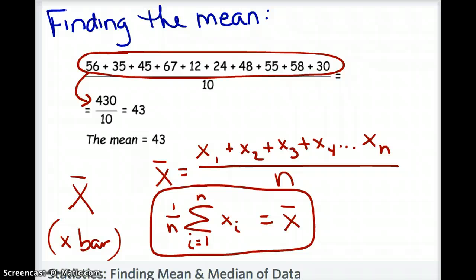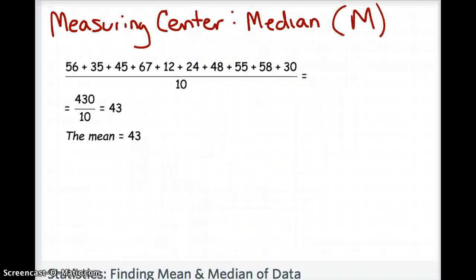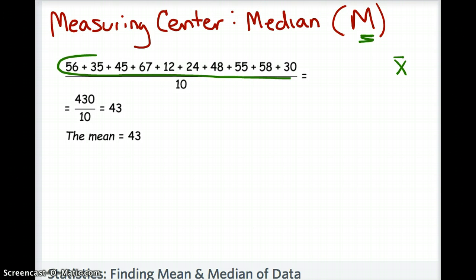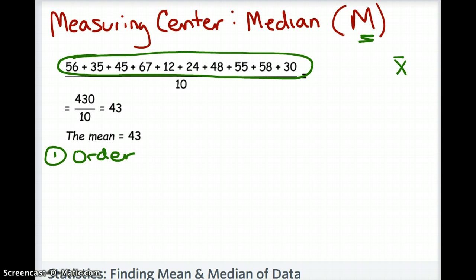Don't get too hung up on the notation — focus on being able to calculate the mean. The other numerical value you'll be asked to find is the median. Notation for median uses a capital M, so remember: x-bar represents mean, capital M represents median. The first thing you must do to find the median is order your data from least to greatest — if your data is not in order, you cannot find the median.